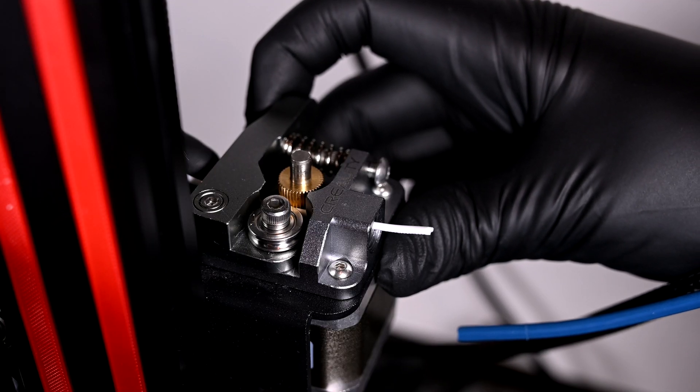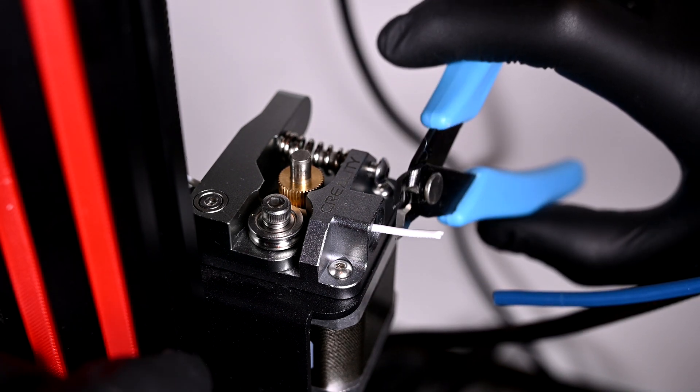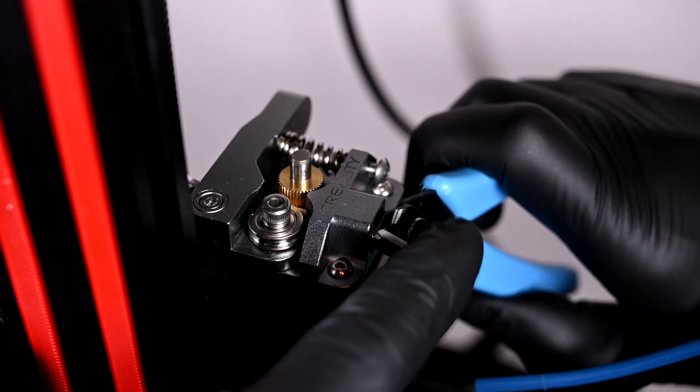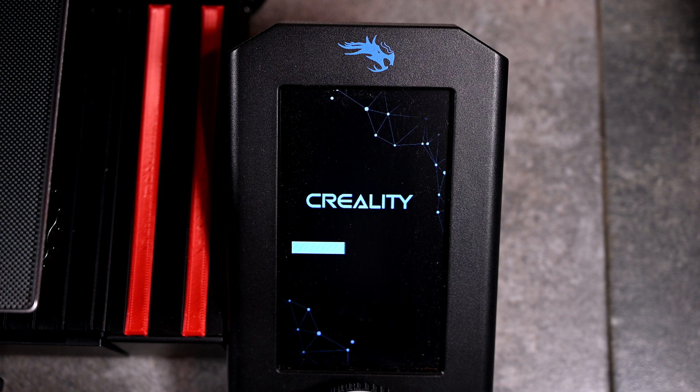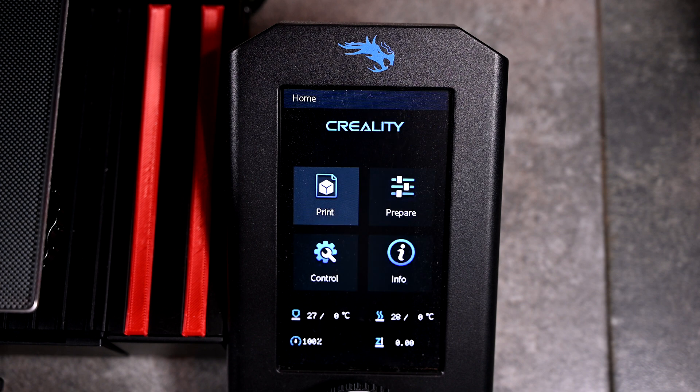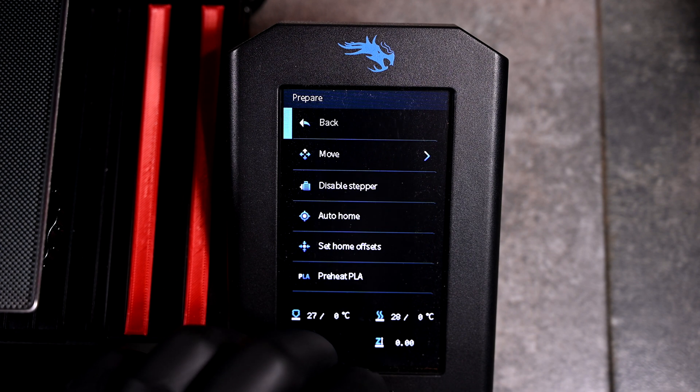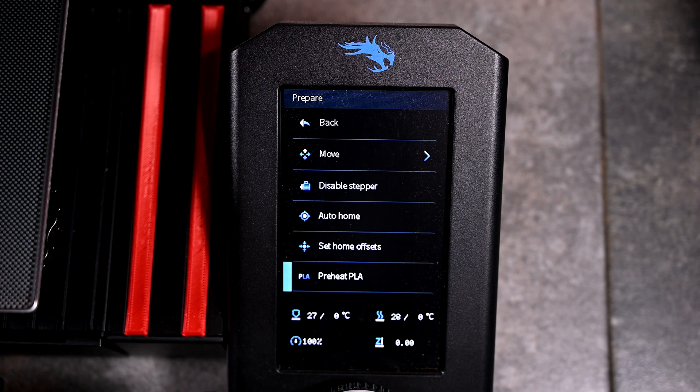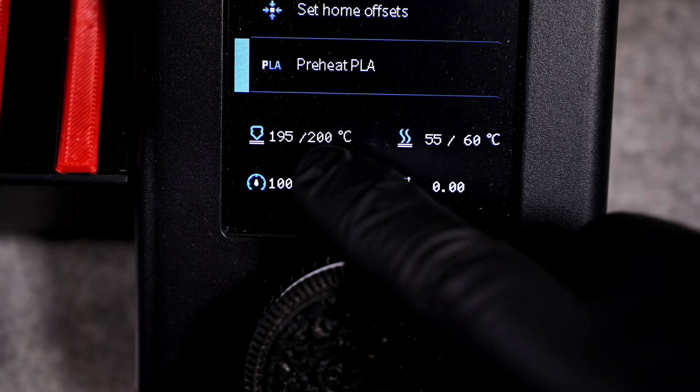Now we need to calibrate the extruder steps, or E-steps. I'll remove the pneumatic connector and insert some filament, then clip it flush with the extruder base. The E-steps indicate how many steps the extruder will take to move a specified length of filament. The printer can be turned on, and we'll head over to Prepare and Preheat PLA. The extruder has a safety preventing it from moving filament if the nozzle is too cool. Even though we aren't using it, the printer has no idea.